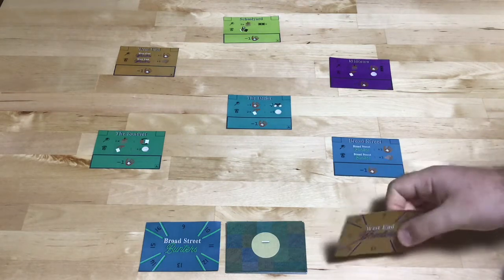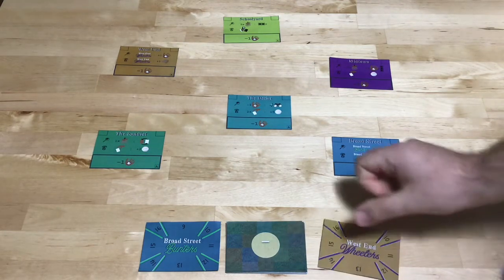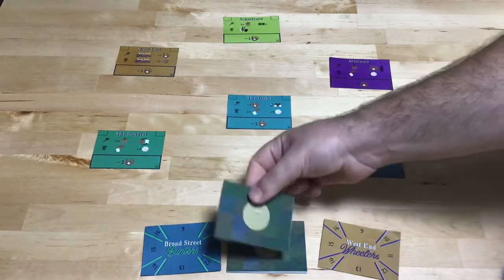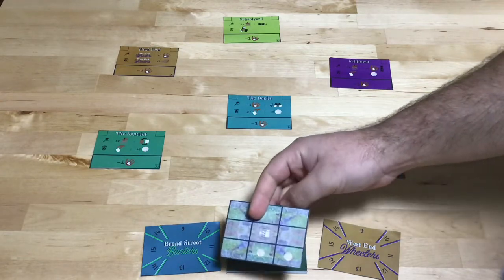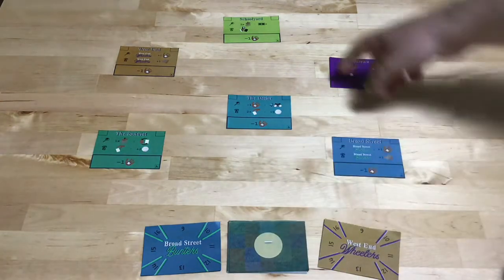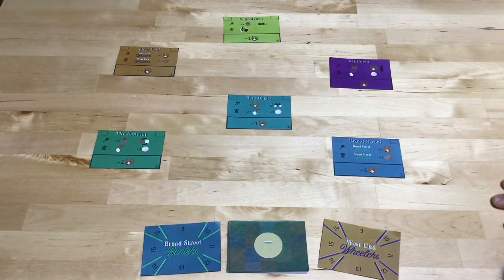The players will take over the teams of the West End Wheelers and the Broad Street Bunters, and they'll be scouting pitchers from this deck. The pitchers have some stats and some special abilities, and all the locations have special abilities as well.